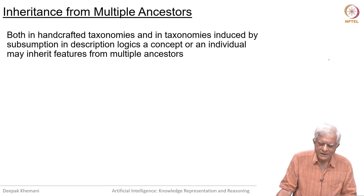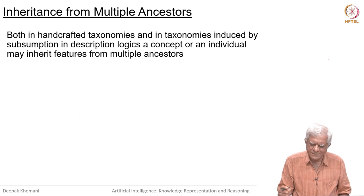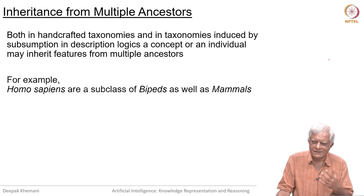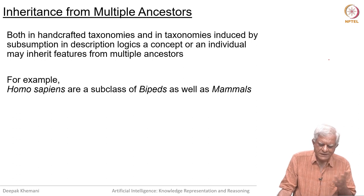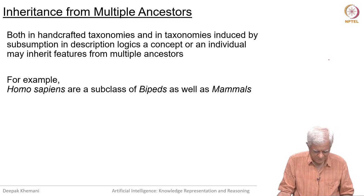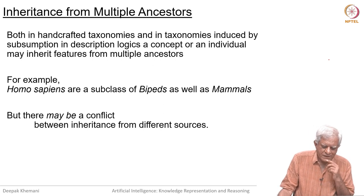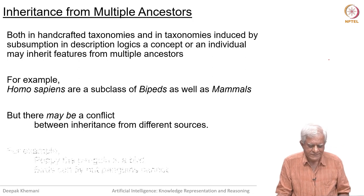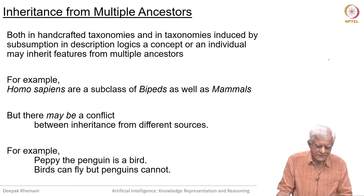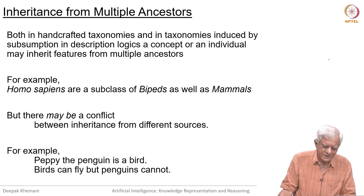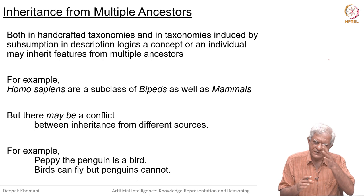Both in handcrafted taxonomies and in taxonomies induced by subsumption in description logics, a concept or an individual may inherit features from multiple ancestors. Sometimes, as we have seen, it may not conflict, but sometimes it could conflict also. For example, we saw that Homo sapiens are a subclass of bipeds as well as of mammals, but there may be a conflict between inheritance from different sources. Then what do we do is a question we want to address. For example, Peppy the penguin is a bird, birds can fly, but penguins cannot fly, and we have arranged them in the same taxonomy.